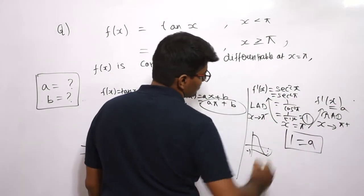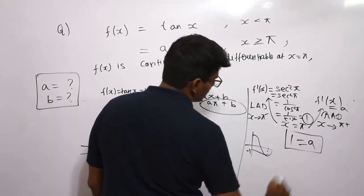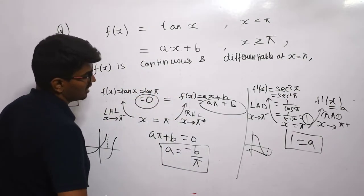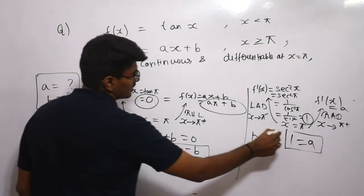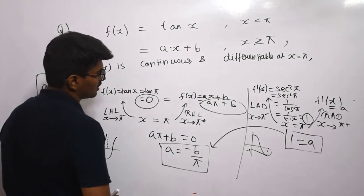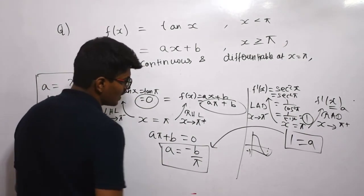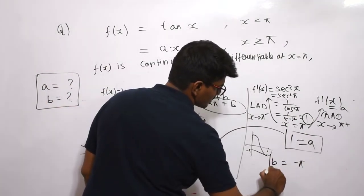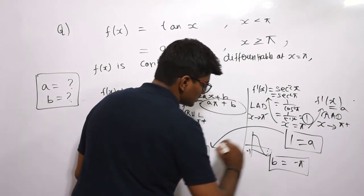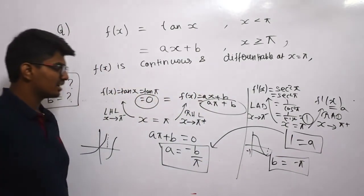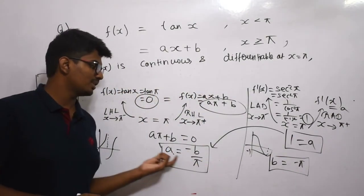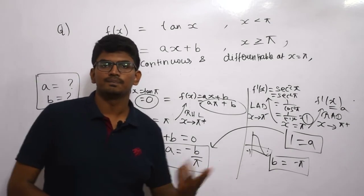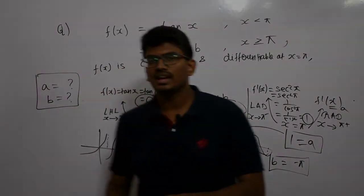With a = 1, substituting back into aπ + b = 0 gives π + b = 0, so b = −π. Therefore a = 1 and b = −π is the final answer for this question.